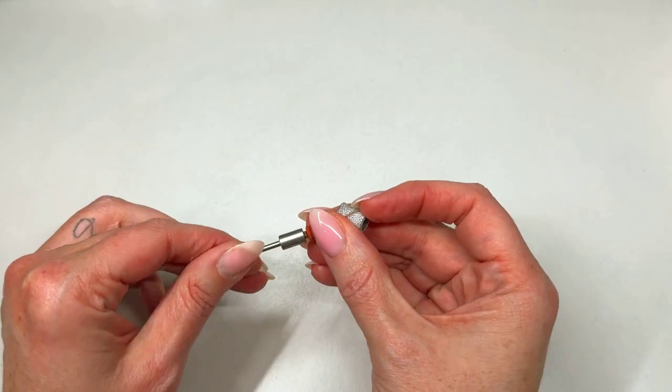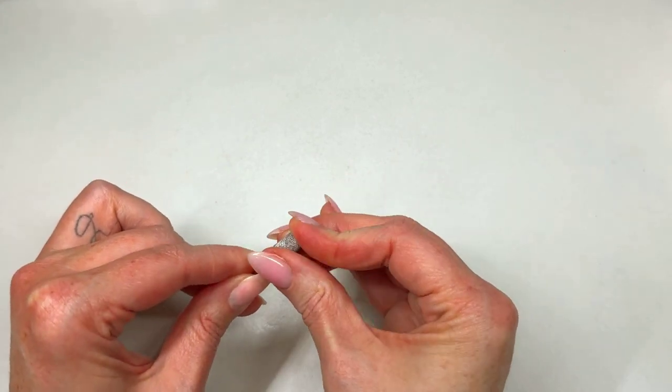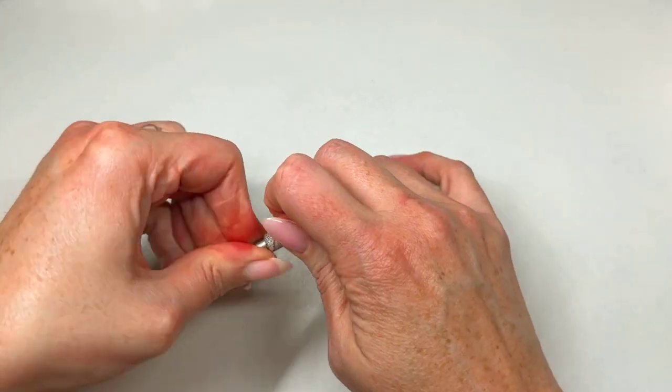So I use a sanding band here. This is an adjustable mandrel. So I loosen it, slide my sanding band down, and then I'm going to run it at a very slow RPM.